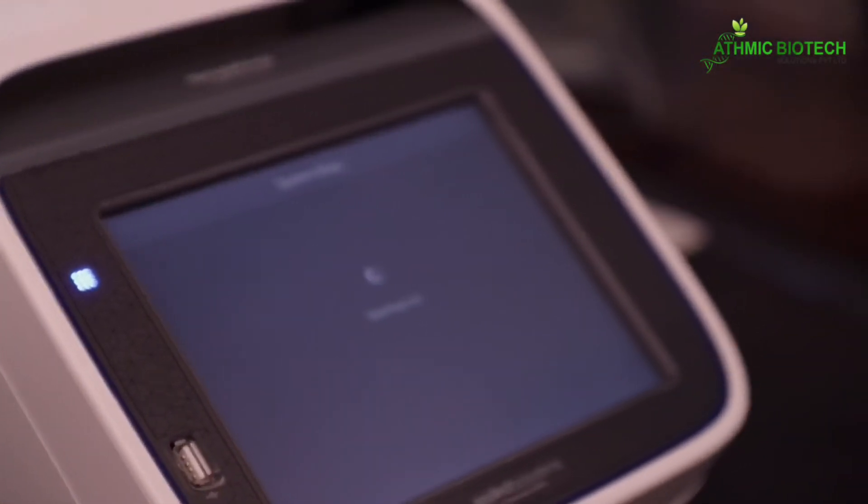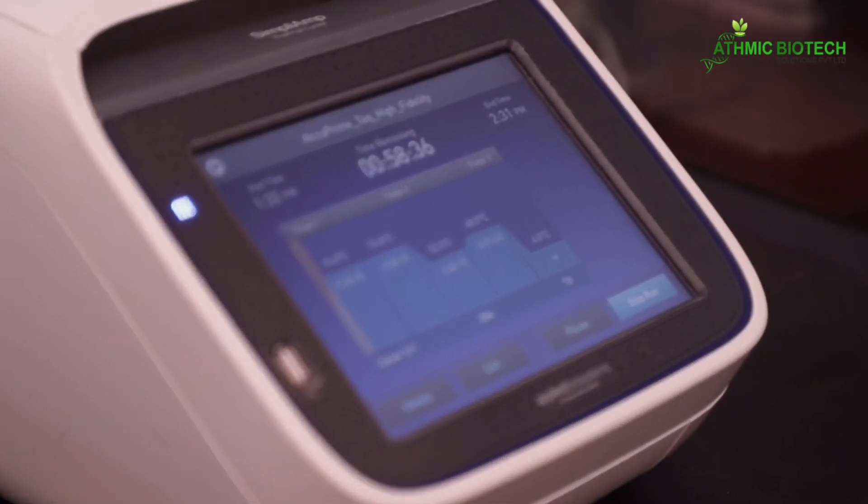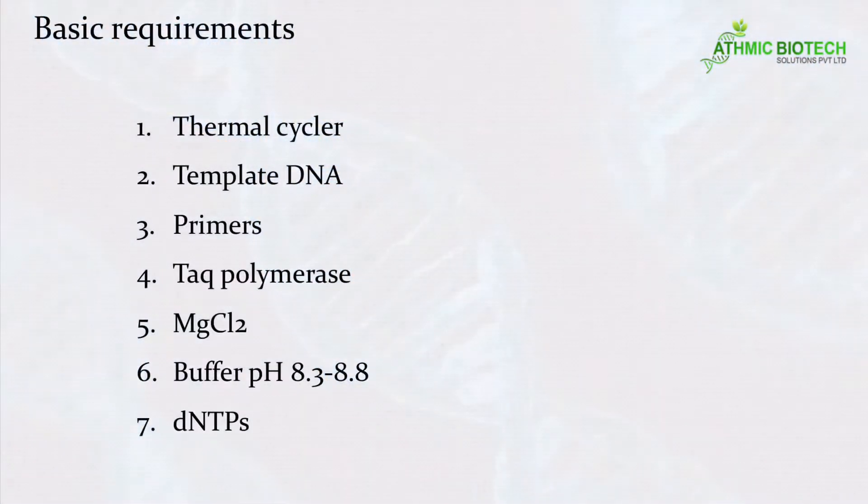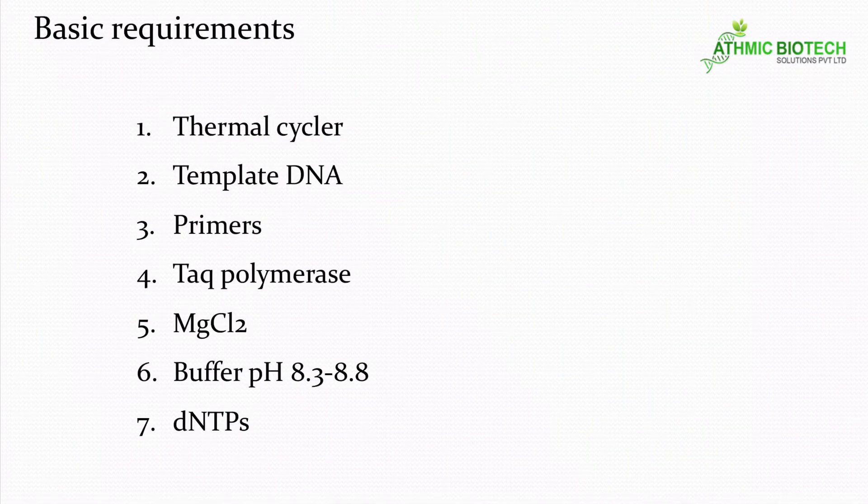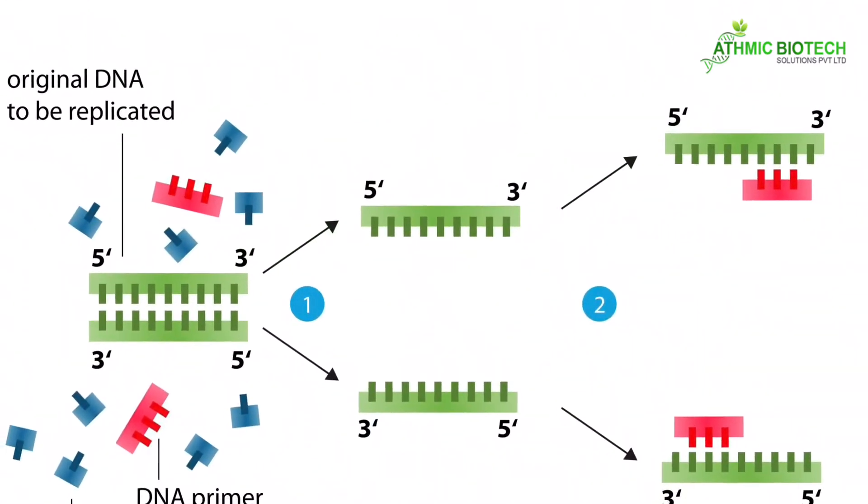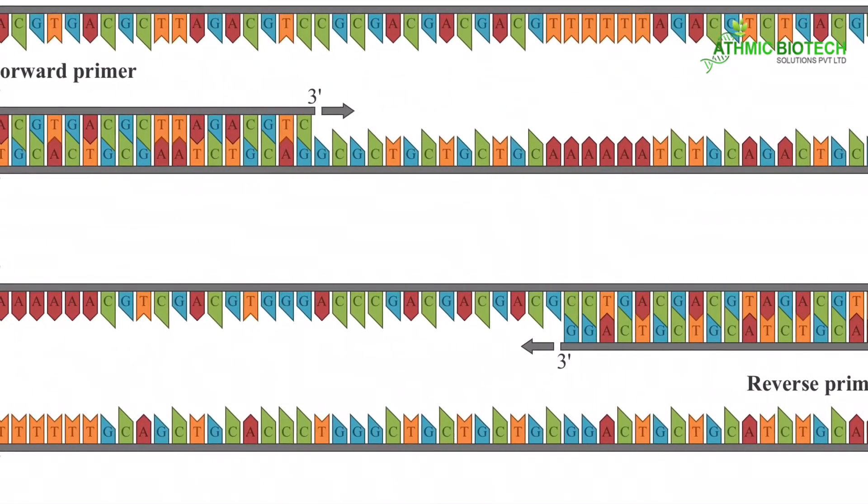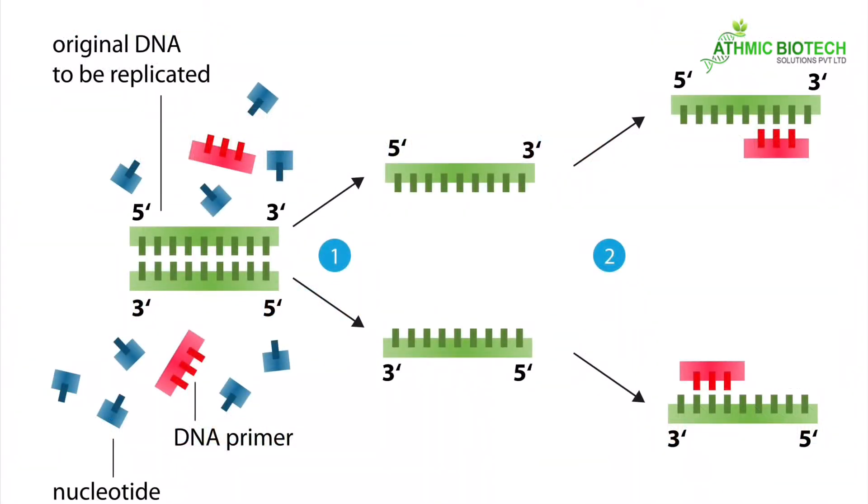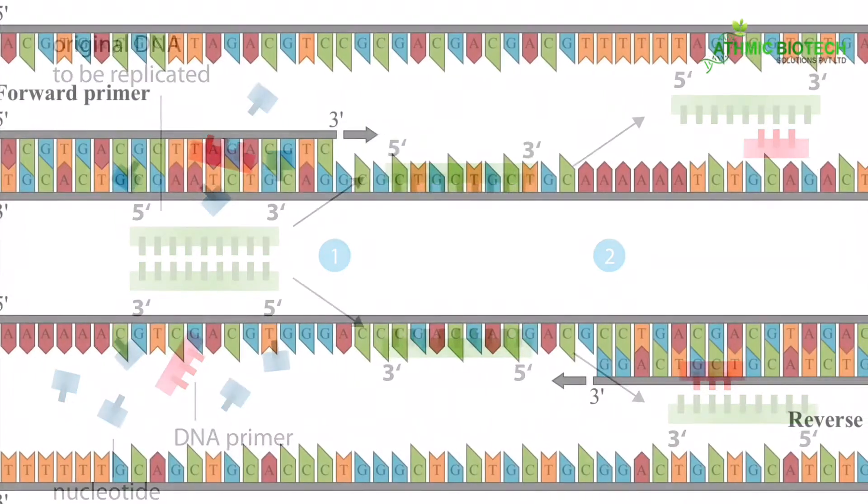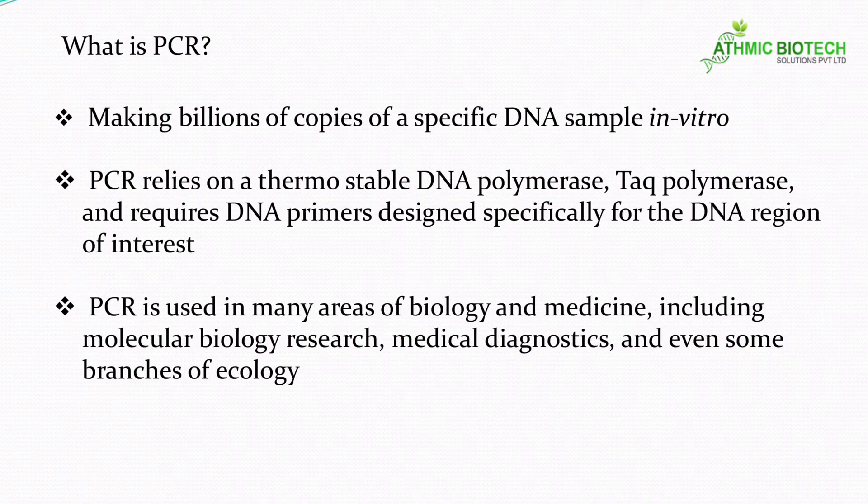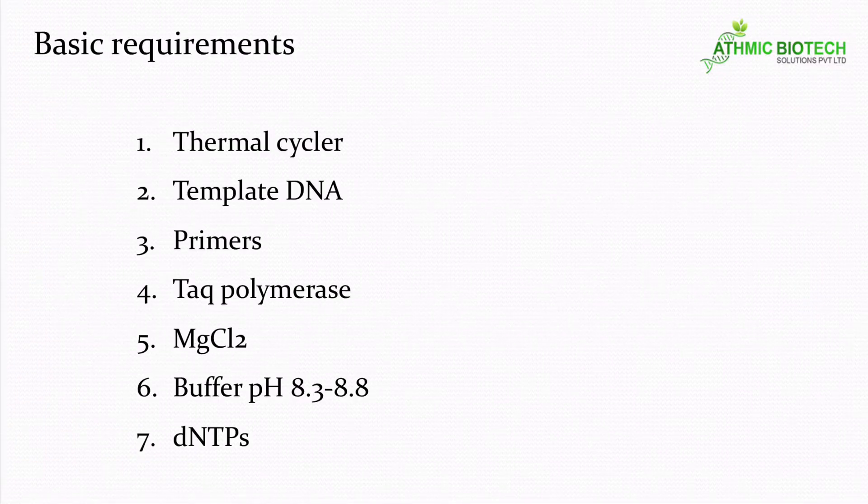What are the requirements for a PCR reaction? First of all, the instrument - a thermal cycler. Then template DNA. You have to isolate DNA from a particular organism of your interest. Suppose you are going to amplify a gene from a particular bacteria. First you have to isolate DNA from that bacteria. So that bacterial genomic DNA is the template DNA for doing PCR. Third one is primers. One forward and one reverse primer is required for doing a PCR. And the fourth one is the enzyme Taq polymerase.